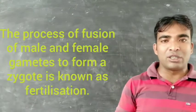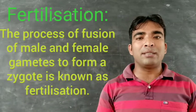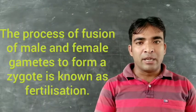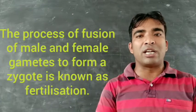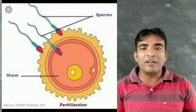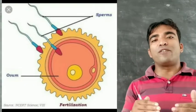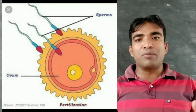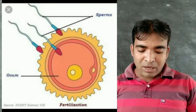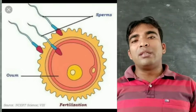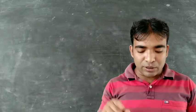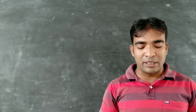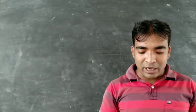What is fertilization? The first step in sexual reproduction is the fusion of male gametes and female gametes. The process in which male gametes and female gametes fuse together to form a zygote — this process is known as fertilization. There are two different types of fertilization: internal fertilization and external fertilization.